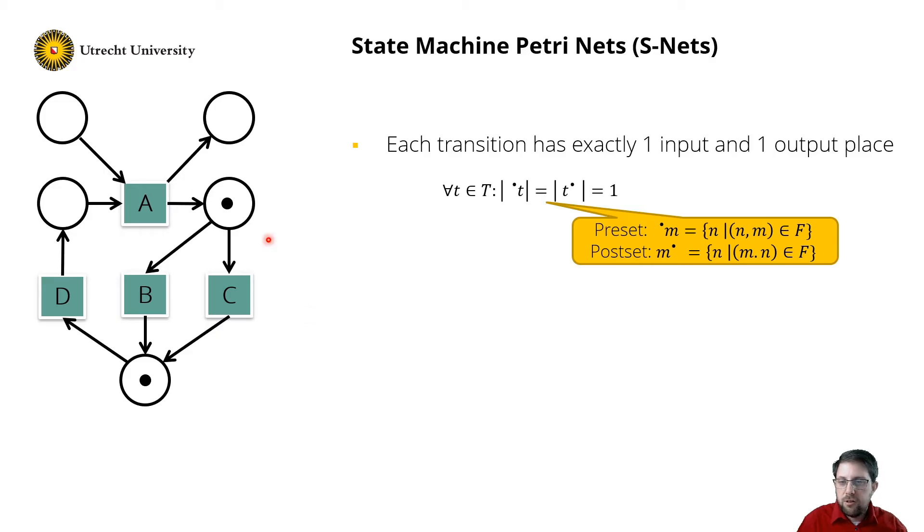So in this example, transition A over here does not qualify as it has two input arcs and two output arcs, which are not allowed. So if we remove those, we have a state machine.